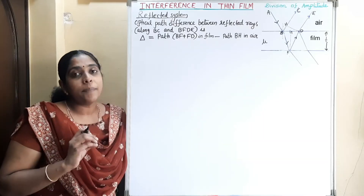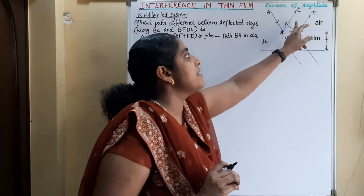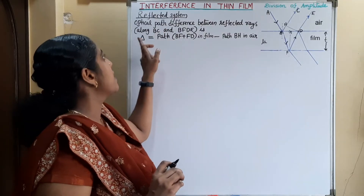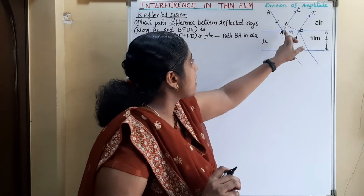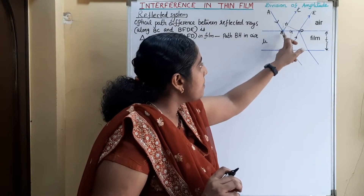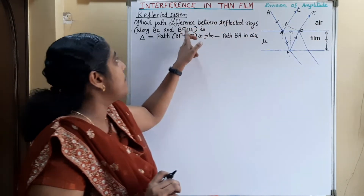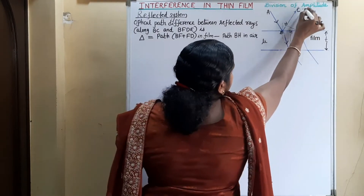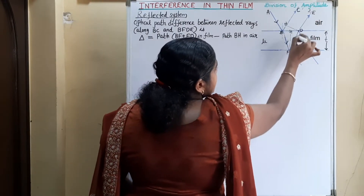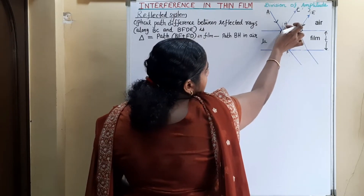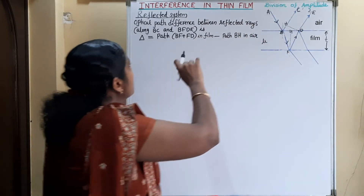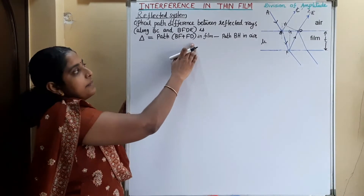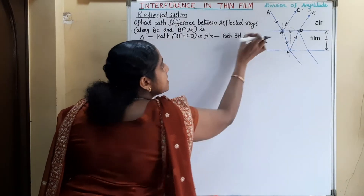Now we can find the path difference between the two reflected rays BC and DE. That is the optical path difference between the reflected ray BC and the second ray which travels along the path B, F, D, E. The extra path travelled by the second ray is BF plus FD, and the extra path by the first ray is BH. So the total path difference will be path BF plus FD in film minus path BH in air.